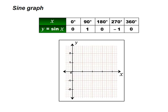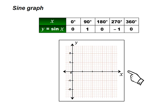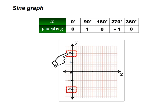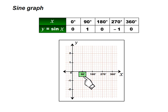Let us quickly draw an empty graph. Note that our y values range from minus 1 to 1. On the graph, let us put minus 2 to positive 2. On the horizontal axis, or x-axis, we will start with 0 degrees, then 90 degrees, then 180 degrees and so on.